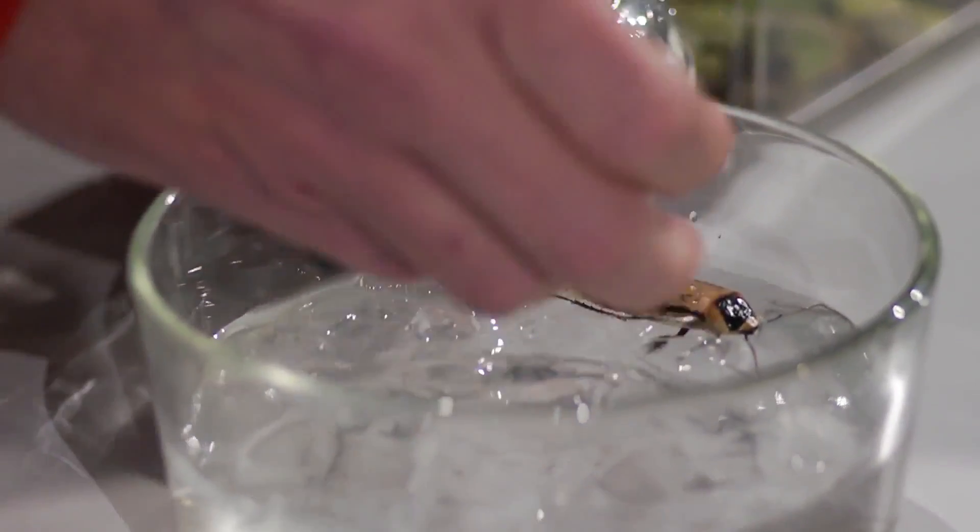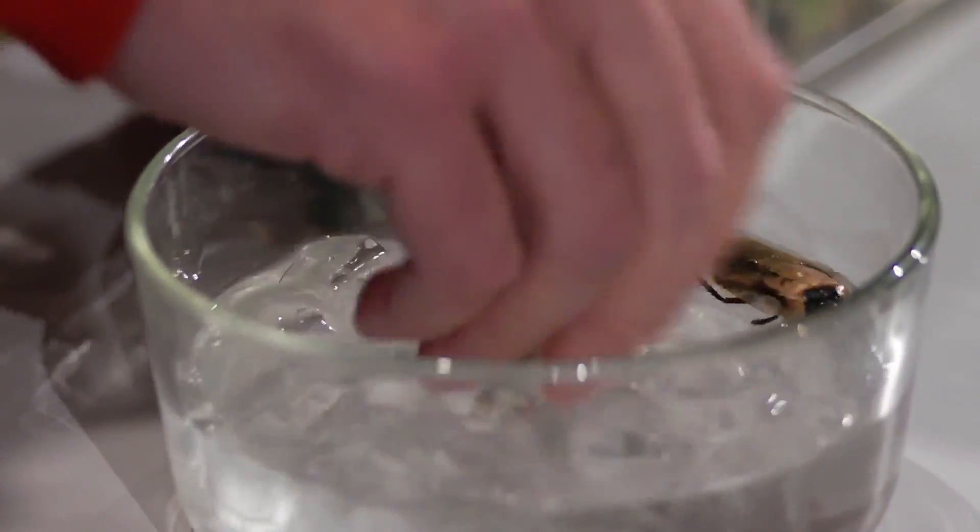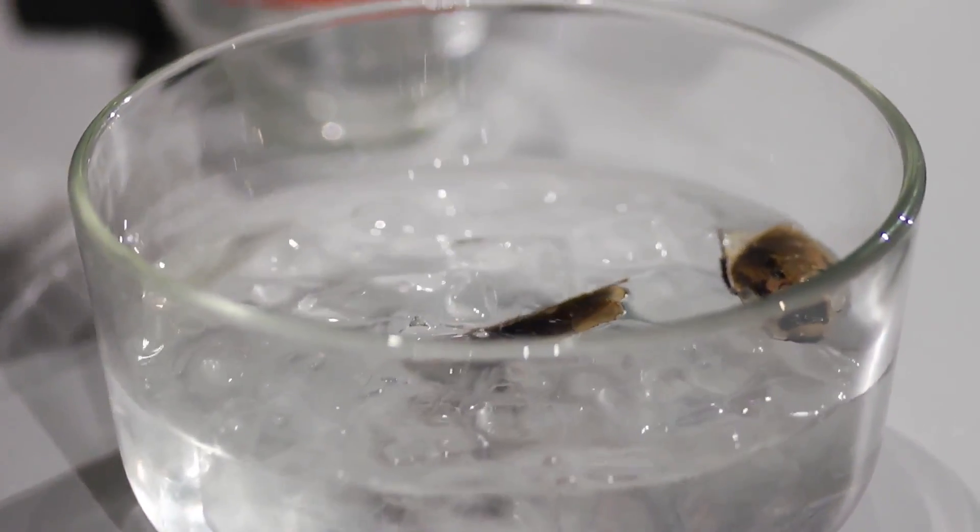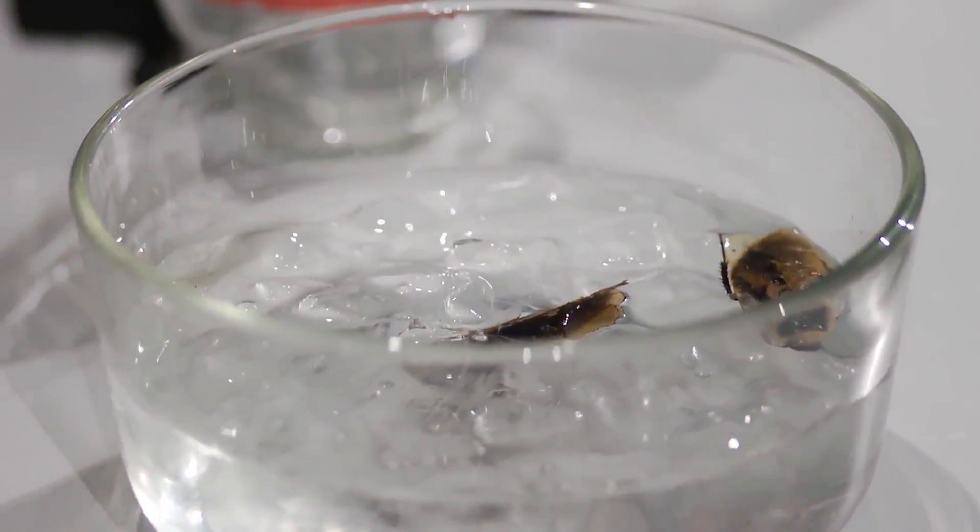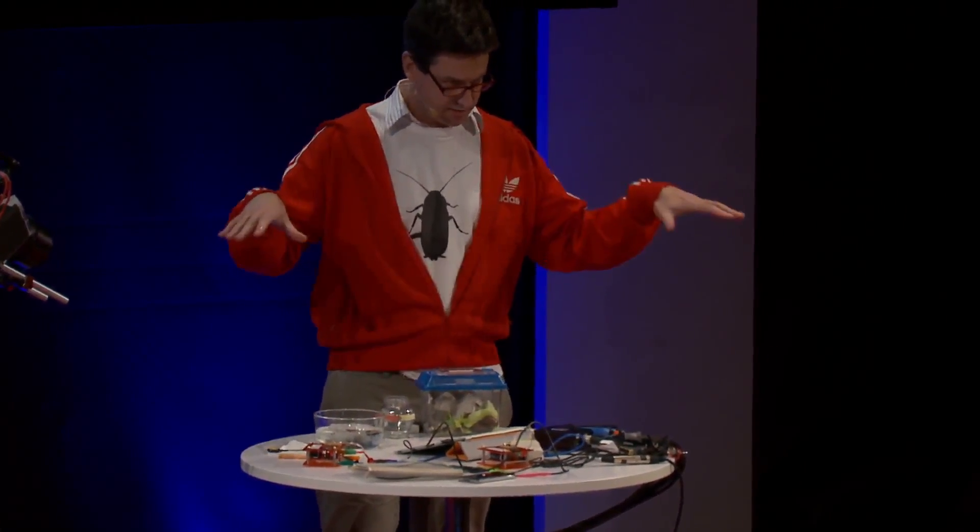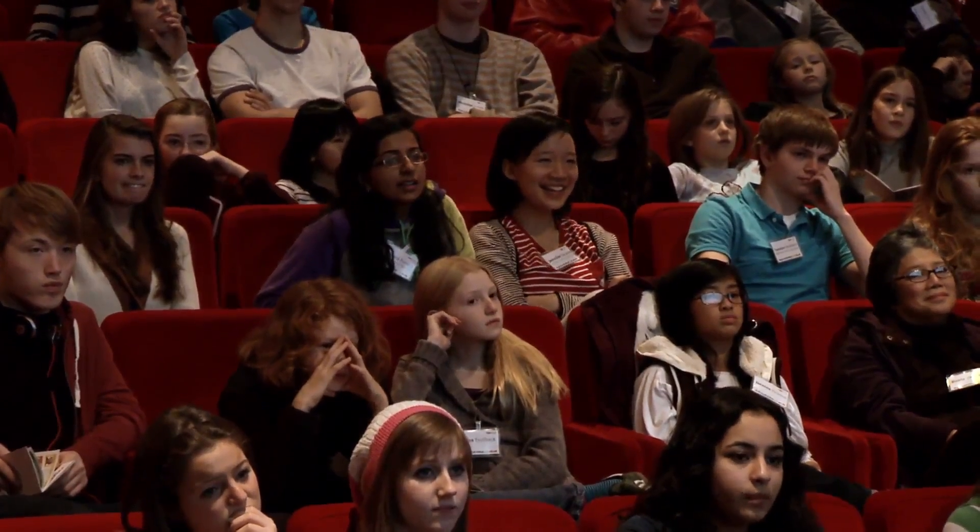So I'm going to put them in some ice water here. What's happening right now is that they're becoming anesthetized, because they're cold-blooded, they become the temperature of the water, and they can't control it. They're not going to be able to feel anything. Let me just tell you a little bit about what we're going to be doing. We're going to be doing a scientific experiment to understand the brain.